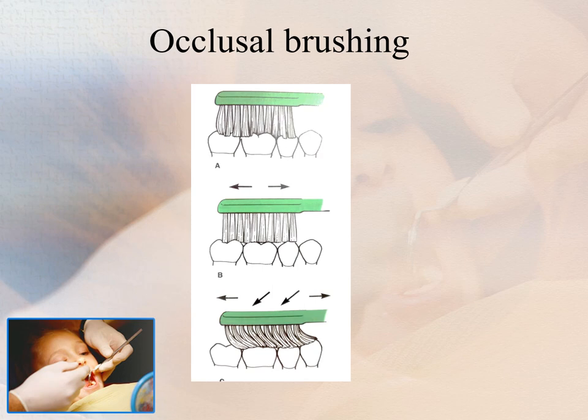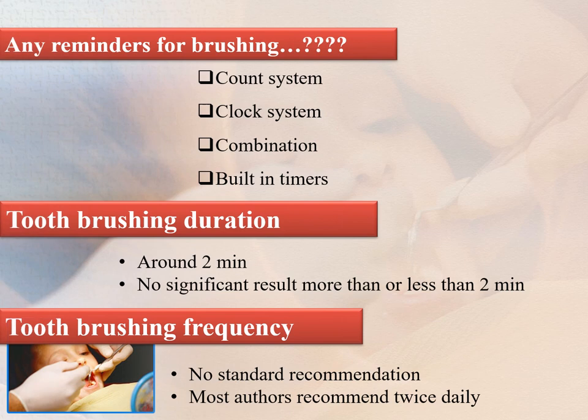For occlusal brushing, press the bristles firmly into the pits and fissures of the occlusal surfaces and brush with about 20 short back-and-forth strokes, a few teeth at a time, until all posterior teeth in all four quadrants are cleaned. Brushing should be done for two minutes ideally, measured by a clock, count system, or built-in timers. There has been no significant result achieved for more or less than two minutes. The optimal frequency for plaque removal by periodontal patients has not been definitively determined.